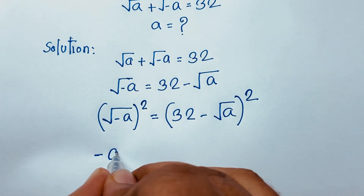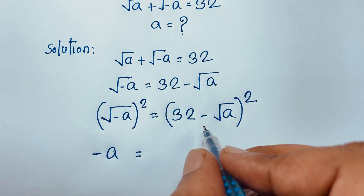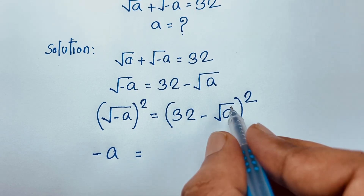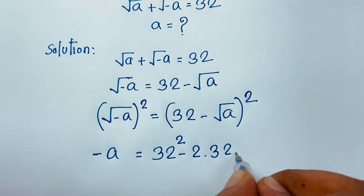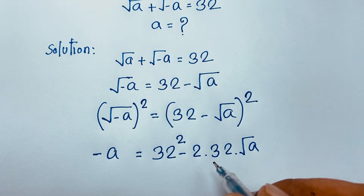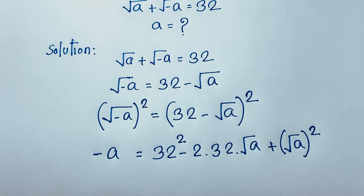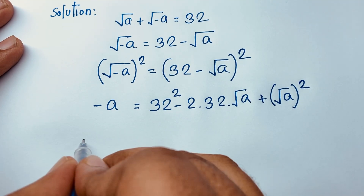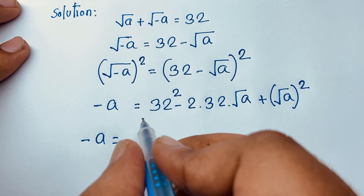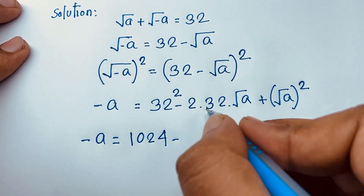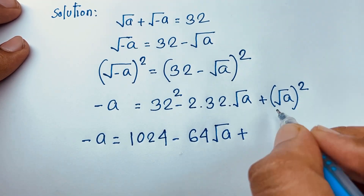The square cancels on the left, giving us negative a. On the right, using the identity (a - b)² = a² - 2ab + b², we expand: 32² minus 2 times 32 times square root of a, plus square root of a squared. So that gives us 1024 minus 64 times square root of a, plus a.